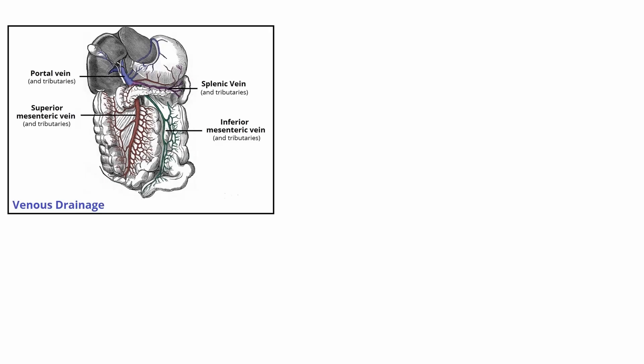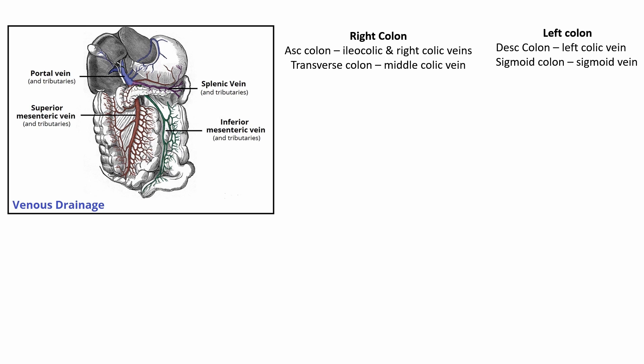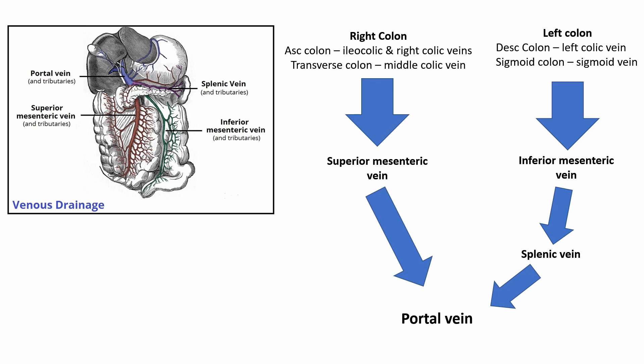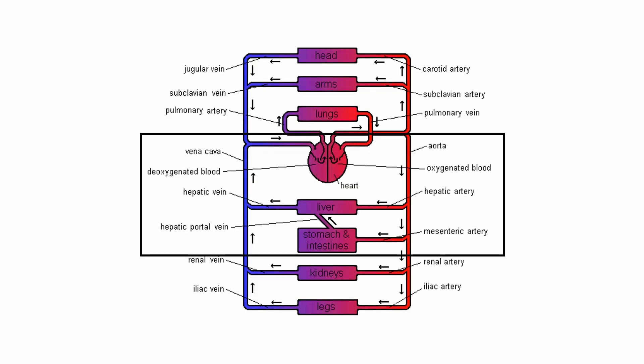The venous drainage of the bowel is very similar to its arterial supply — think of it as a corresponding vein to each artery. In the right colon, the ascending colon drains into the ileocolic and right colic veins, and the transverse colon drains into the middle colic vein. In the left colon, the descending colon drains into the left colic vein and the sigmoid colon drains into the sigmoid vein. The right colon drains into the superior mesenteric vein and the left colon into the inferior mesenteric vein. The inferior mesenteric drains into the splenic vein, and together with the superior mesenteric they drain into the portal vein. The portal vein goes through the liver's sinusoids, and after metabolism the blood enters the hepatic vein, which drains into the inferior vena cava and then into systemic circulation. Here we can see the arteriovenous diagram of the blood supply as described.